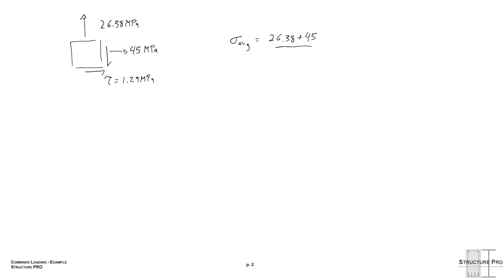So a new page, I've drawn the element again. Sigma average is the average of these two normal stresses, 35.69 MPa. And then R, since we do have a shear stress, the calculation is a little bit involved. It's the difference of the two divided by two, squared, plus tau xy squared. 45 minus 26.38 over 2, squared, plus 1.29 squared, all square rooted.